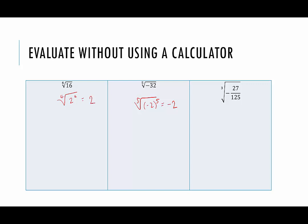We have the cubed root of negative 27 over 125. We can split it up and say it's the cubed root of negative 27 over the cubed root of 125, and do each one separately. The cubed root of negative 27: what number times itself times itself equals negative 27? That would be negative 3, so that's the cubed root of negative 3 cubed. And 125 is 5 cubed. The cubed root and the cubes cancel, leaving us with negative 3 over 5, or negative 3 fifths.